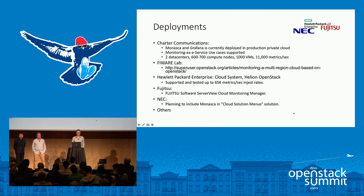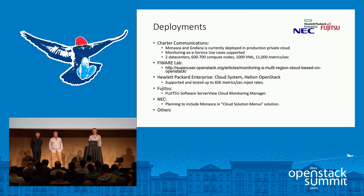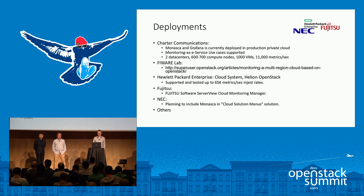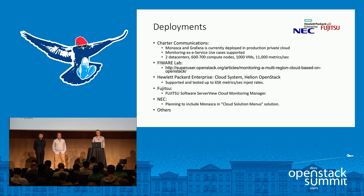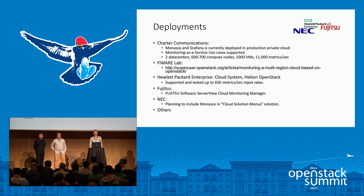Here are the most important known deployments of Monasca. Charter Communications uses Monasca for monitoring a production private cloud with two data centers and up to 700 compute nodes, providing real-life testing and issue reporting. FIWARE Lab is a multi-region OpenStack-based cloud in Europe and South America using Monasca and Ceilometer agents. HP Helion OpenStack distribution and Fujitsu's product server view cloud monitoring manager also include Monasca. NEC plans to add Monasca to their cloud solution products.